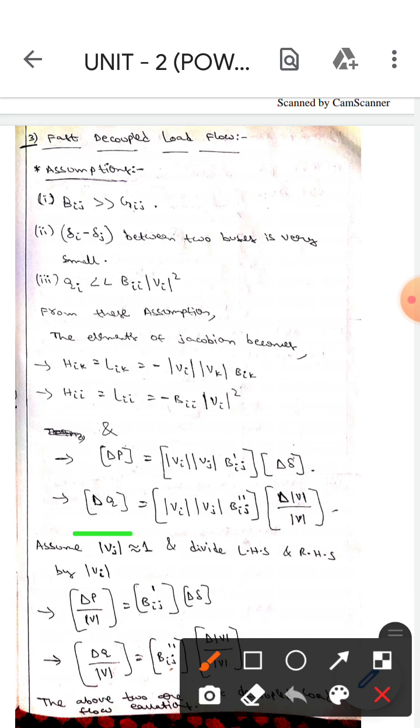modulus of Vi into modulus of Vj into B dash ij. And also another matrix form will be there, delta delta, and it is in the form of matrix modulus of Vi, modulus of Vj